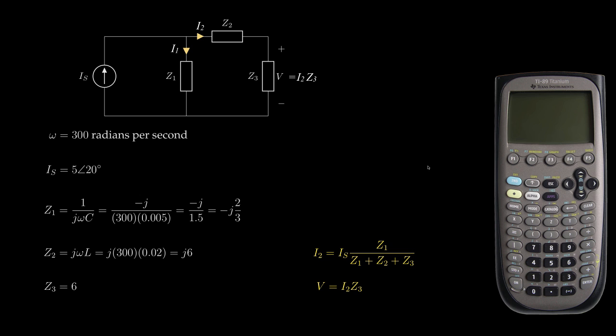To do so, I'll use the following alphabetic memory variables to store intermediate results as we work through our calculations. For the current IS, I'll store that in the TI-89's numeric variable A. The capacitor impedance that I've called Z1, I'll store in the variable B.